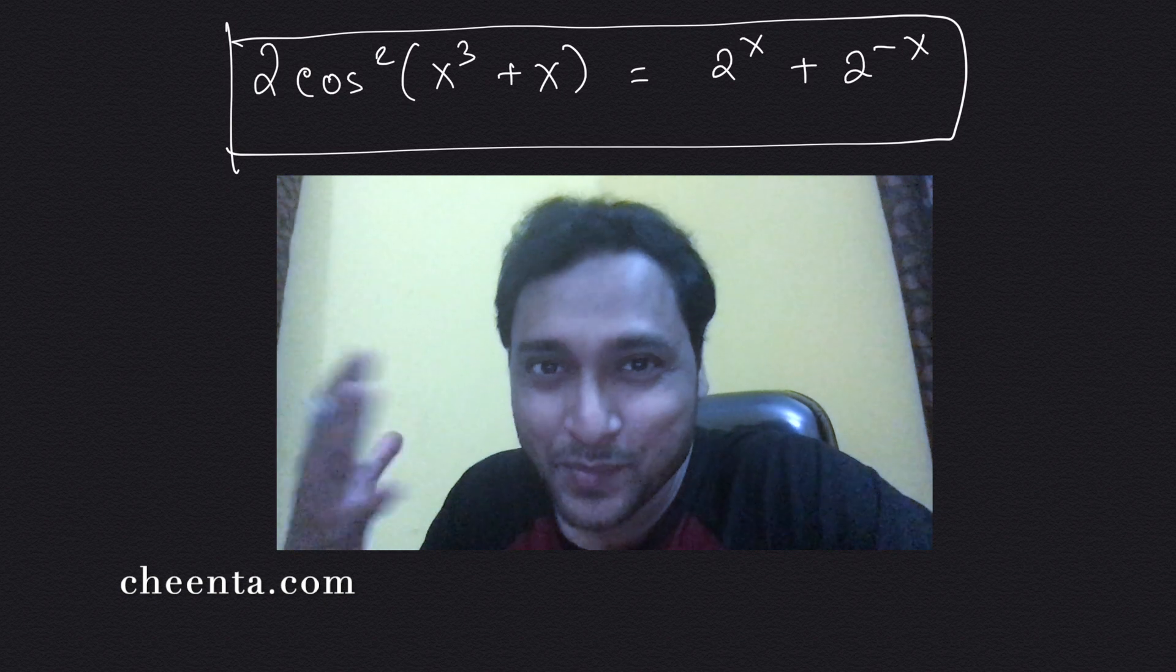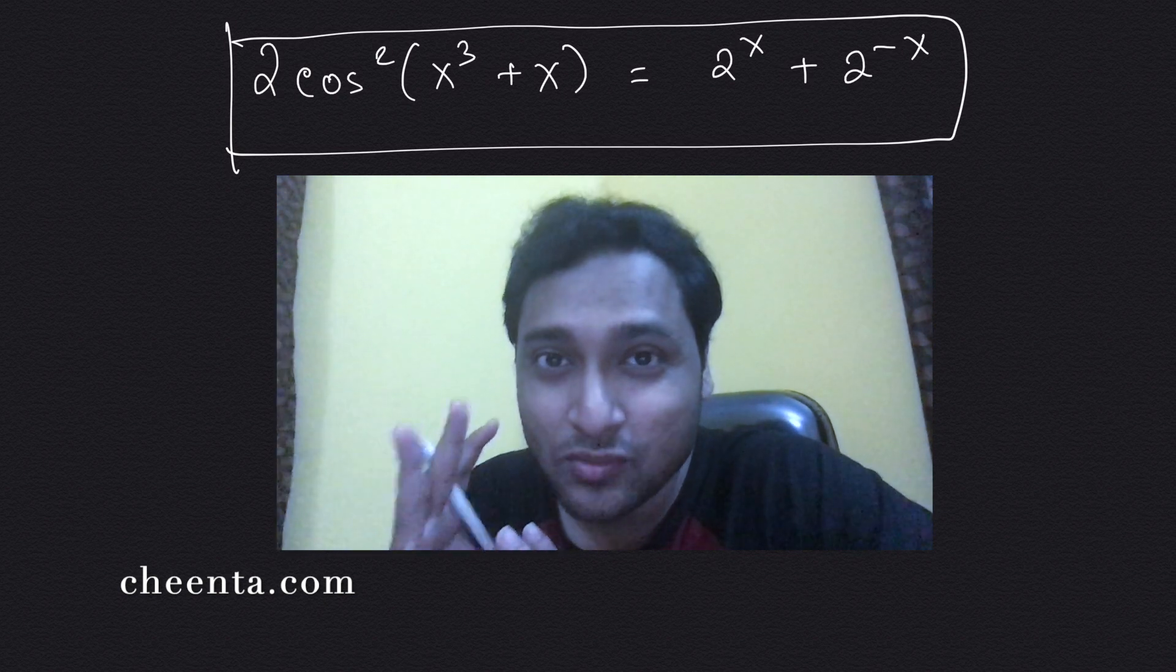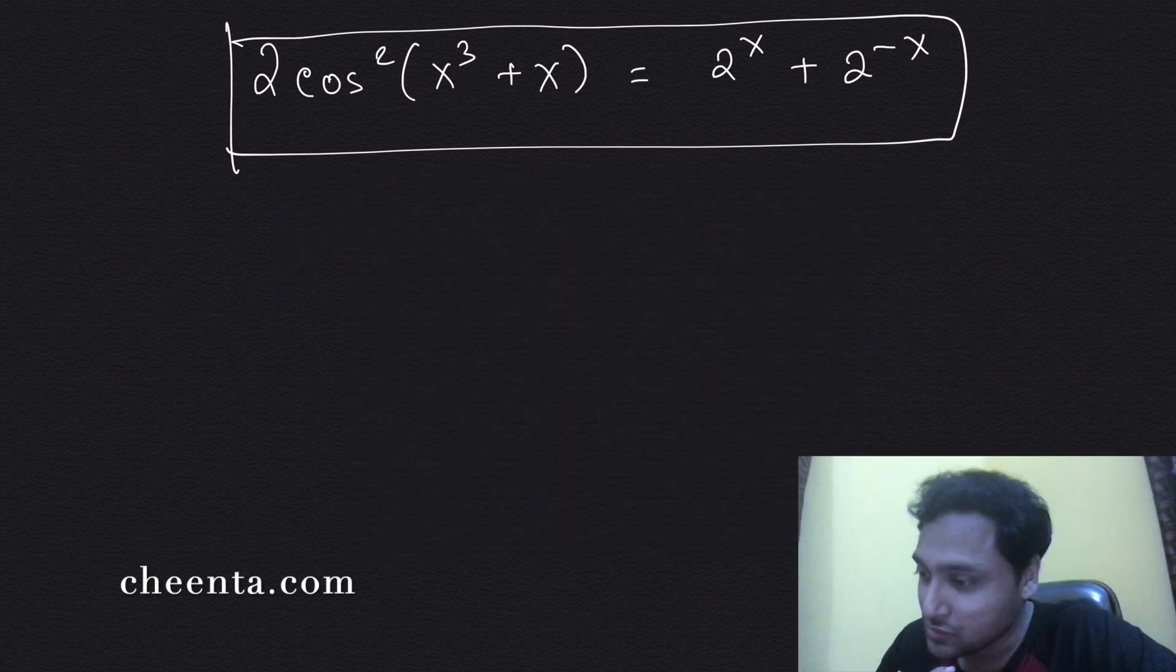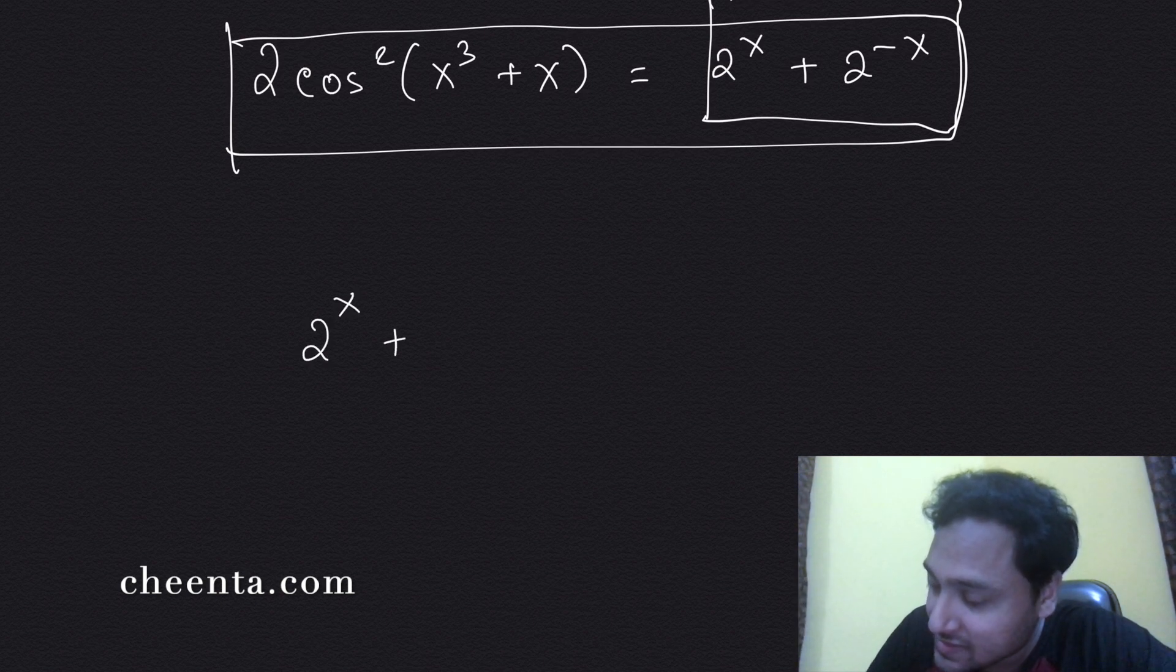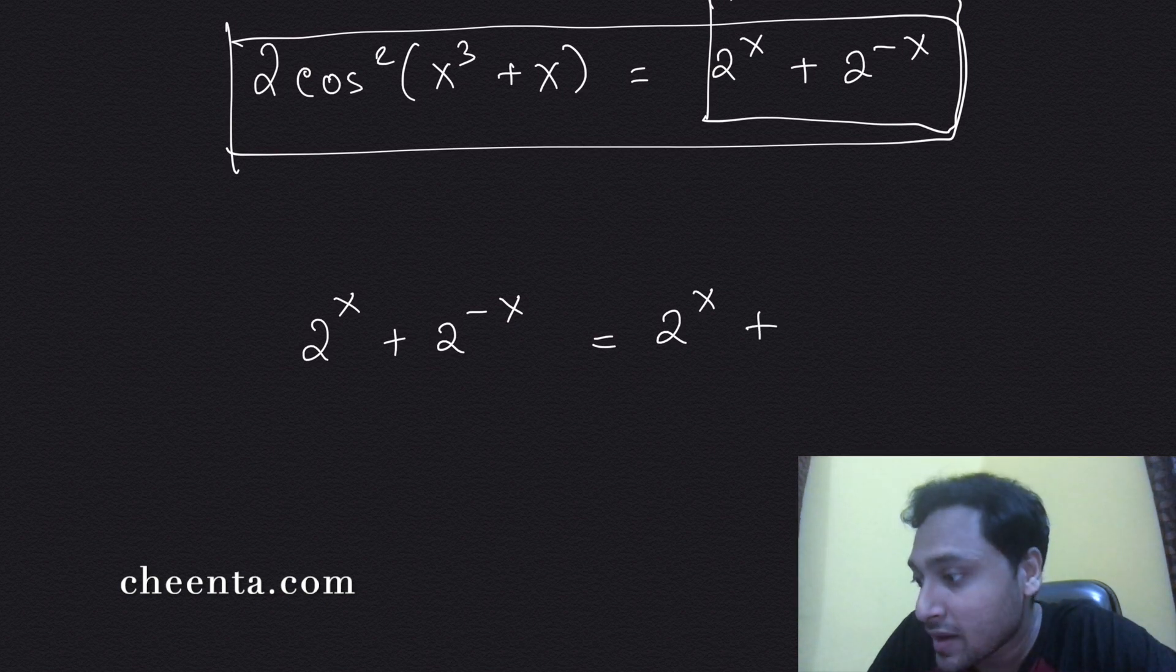The strategy is surprisingly different - you have to use the notion of inequality to do this. Notice that 2^x + 2^(-x), this quantity which equals 2^x + 1/(2^x).